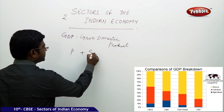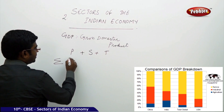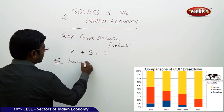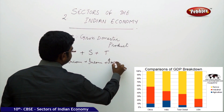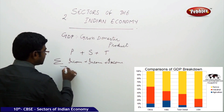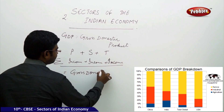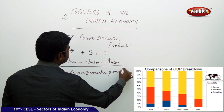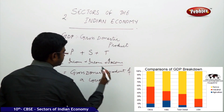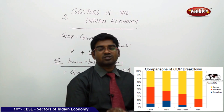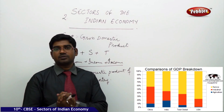Primary plus secondary plus territory. Sum of primary sector income plus secondary income plus territory income. This three total is called gross domestic product of a country. So the sum total of all the three sectors of primary, secondary and territory sector together, the final output is called gross domestic product.